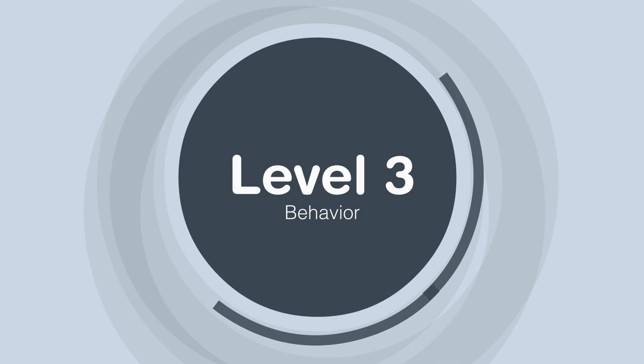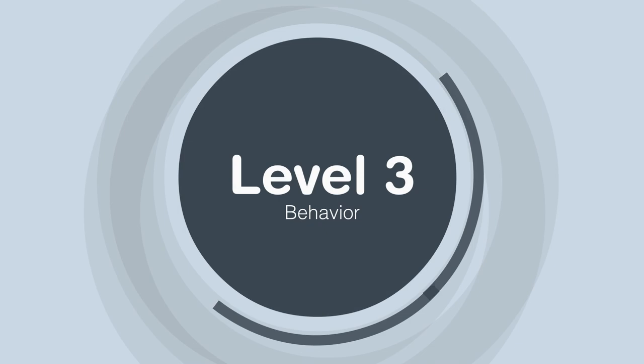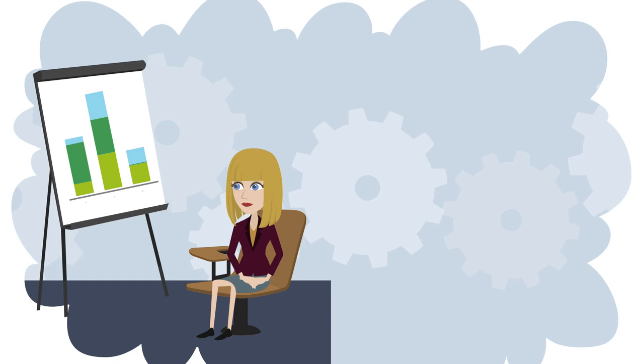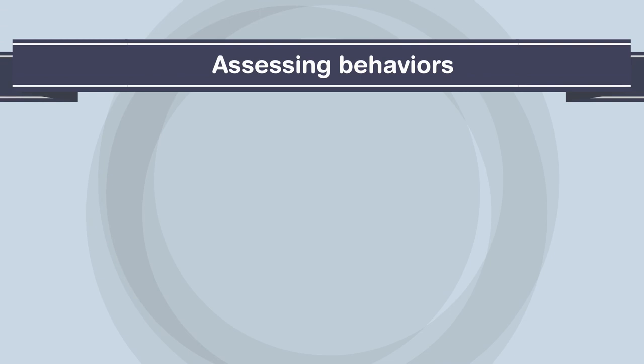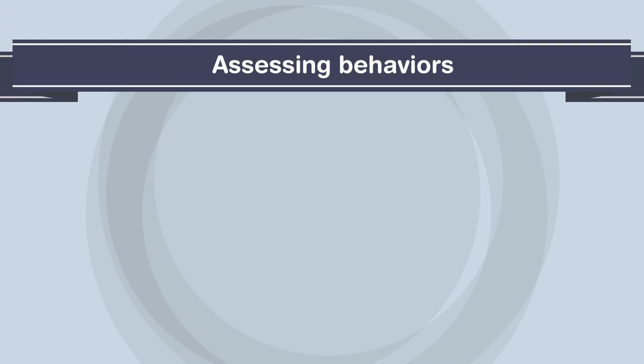Level three: Behavior. This level determines if the participants' behaviors have changed following the training by evaluating the transfer of the knowledge, skills, and attitudes acquired during the training to the workstation. This evaluation is done two to three months after the training by means of a survey or interview in order to observe the targeted behaviors.